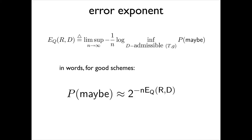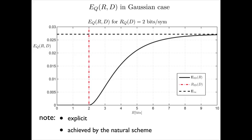Let me say something about error exponents. In our setting, in practice the data size is finite. We work at a rate R larger than R_Q(D). If you do, the probability of maybe can be made to vanish exponentially rapidly — like 2^{-n times something}, where that something is exactly the error exponent. Understanding this object and how to achieve it is as important as understanding R_Q(D) itself.